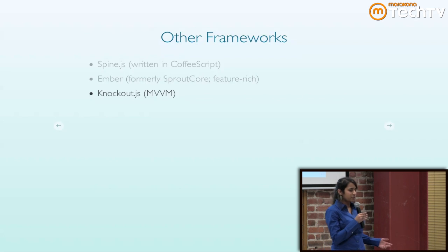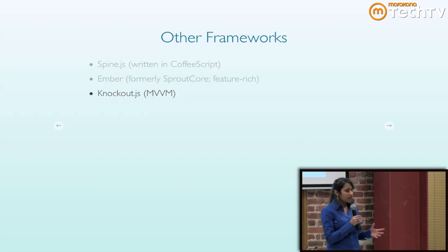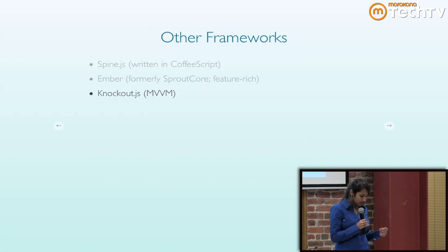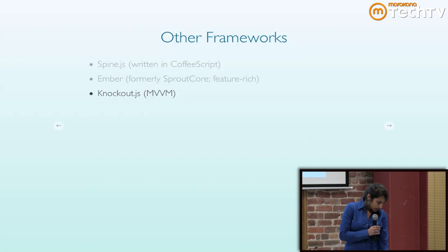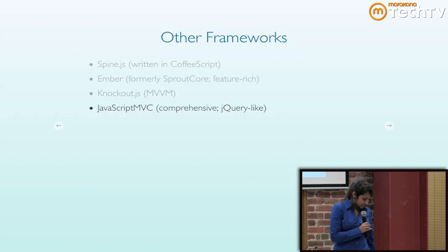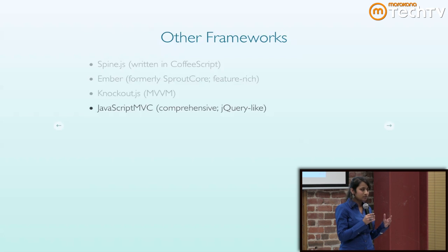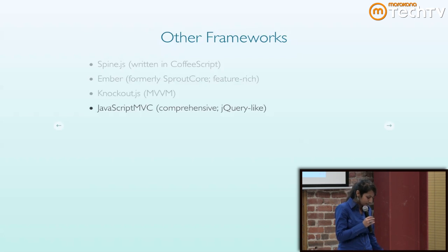Knockout is a little different from the rest because it's not MVC — it's MVVM. What Knockout really does well is that it excels at data-binding templates. There's like a whole scripting language in the HTML so you can bind things really well. JavaScript MVC is older — one of the oldest frameworks out there. It's extremely comprehensive; it has tests and everything.